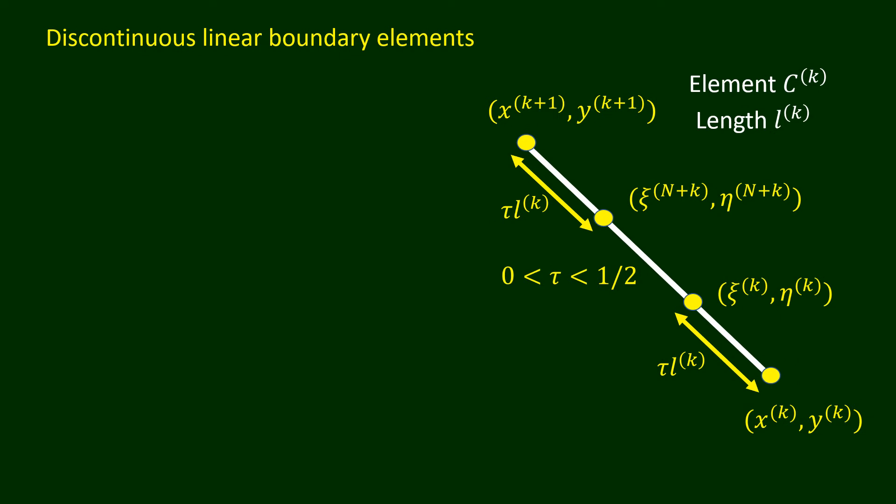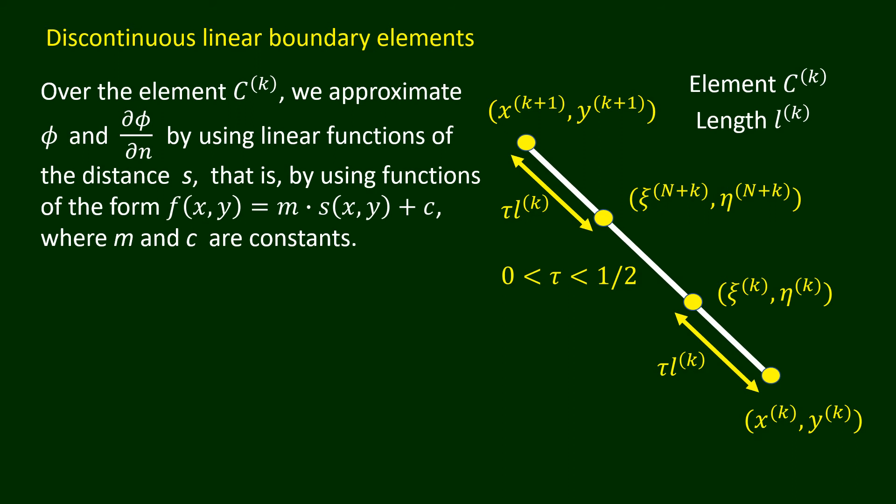Over the element ck, we approximate phi and del phi over del n by using linear functions of the distance s — that is, by using functions of the form f(x,y) equals m times s(x,y) plus c, where m and c are constants.